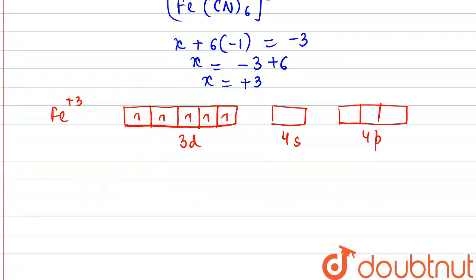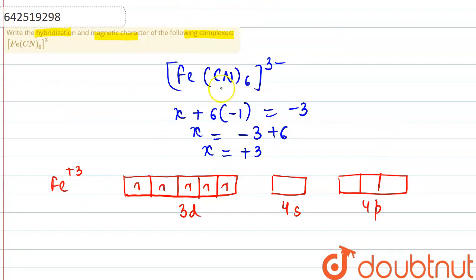Now, if we see that in this complex, cyanide is a strong field ligand. Therefore, there will be the formation of low spin complex. There would be pairing done using